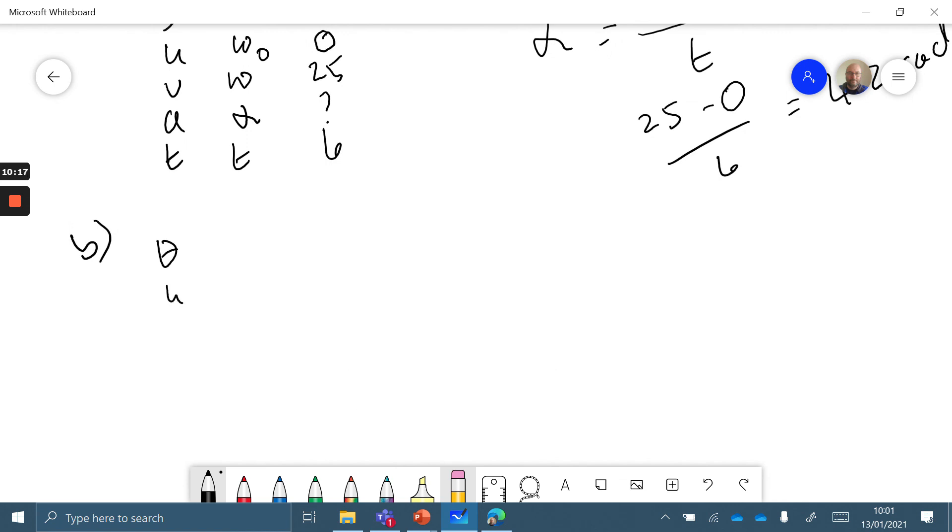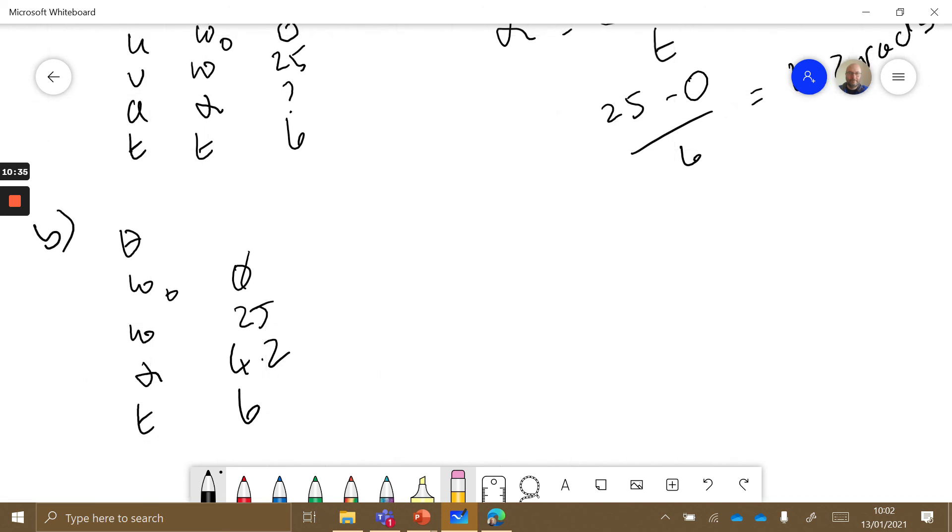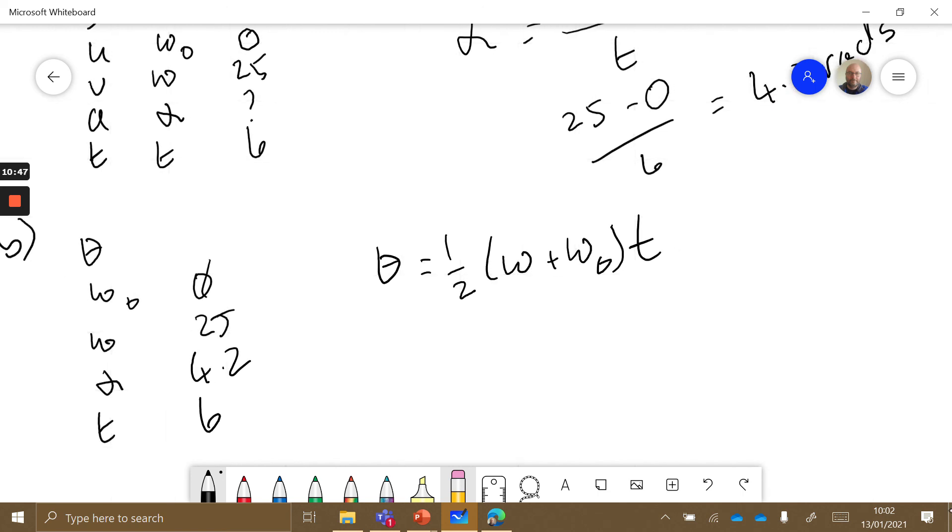I can do the same again - I can write down theta, omega naught, omega, alpha, t. Now I don't have theta, but I know omega naught is 0, omega is 25, I've calculated alpha now - that's 4.2 - and it takes six seconds. This of course is where I choose to use theta equals a half omega plus omega naught t. I'm sure there's many different ways you can do this one. That equals, after plugging the numbers in, 75 radians.